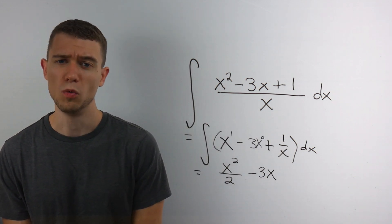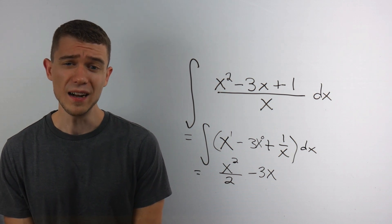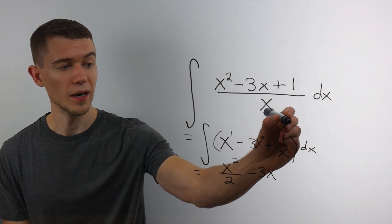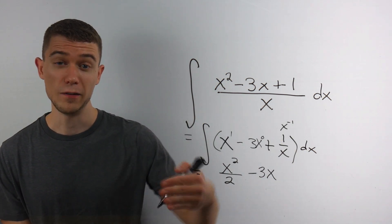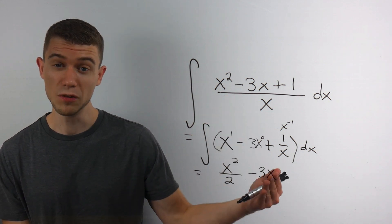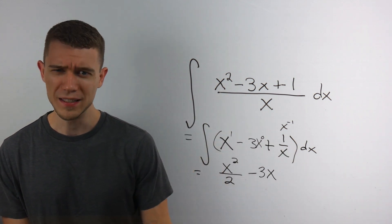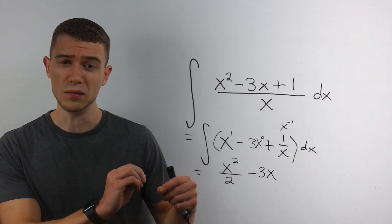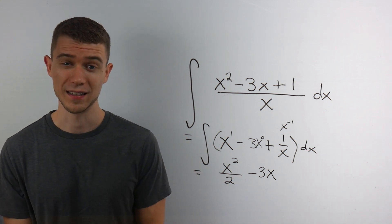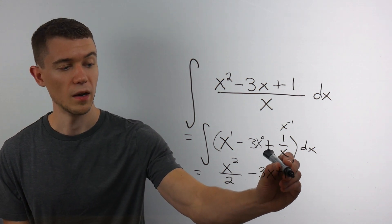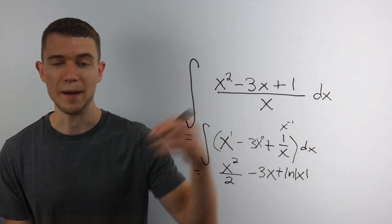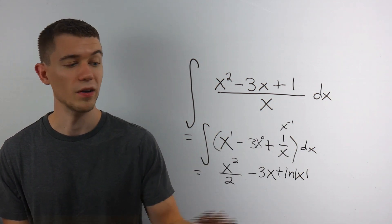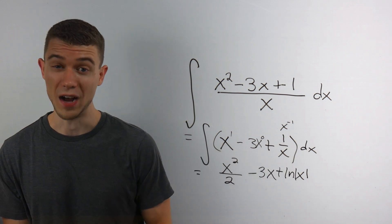What about this one? 1 over x? That's not going to follow the same rule, because this really means x to the minus 1st power. And if you try to add 1 to the power, you'd have x to the 0, and then you divide by 0, that's not going to work. So we think, what can we take the derivative of to give us 1 over x? Well, it's the natural log of x, and we're going to put absolute values there. Whenever you anti-derive 1 over x, the anti-derivative is ln absolute value of x.